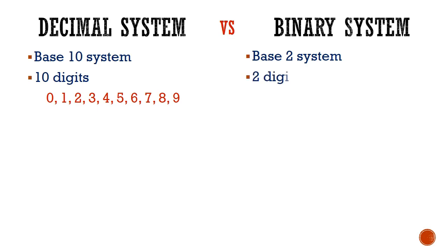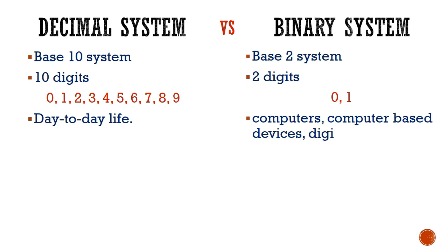And only two digits are used, that is 0 and 1, to express any number in binary system. Decimal system is used in day-to-day life whereas binary numbers are used in computers, computer-based devices, digital electronics, logic gates, etc.